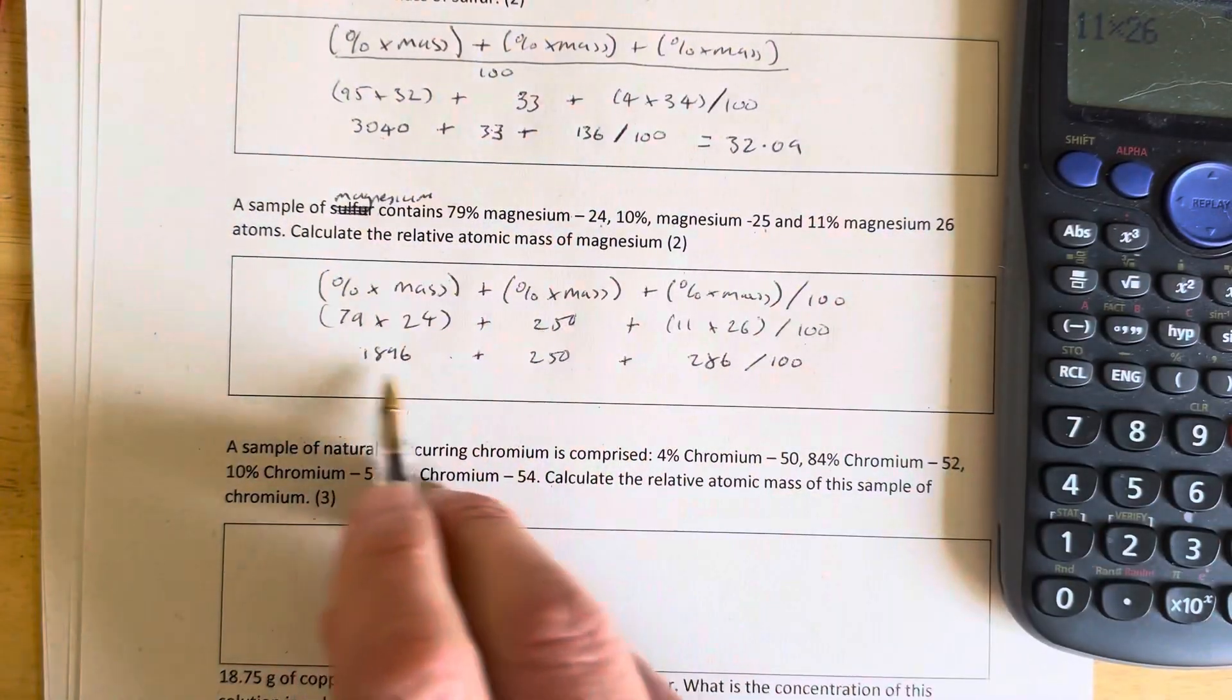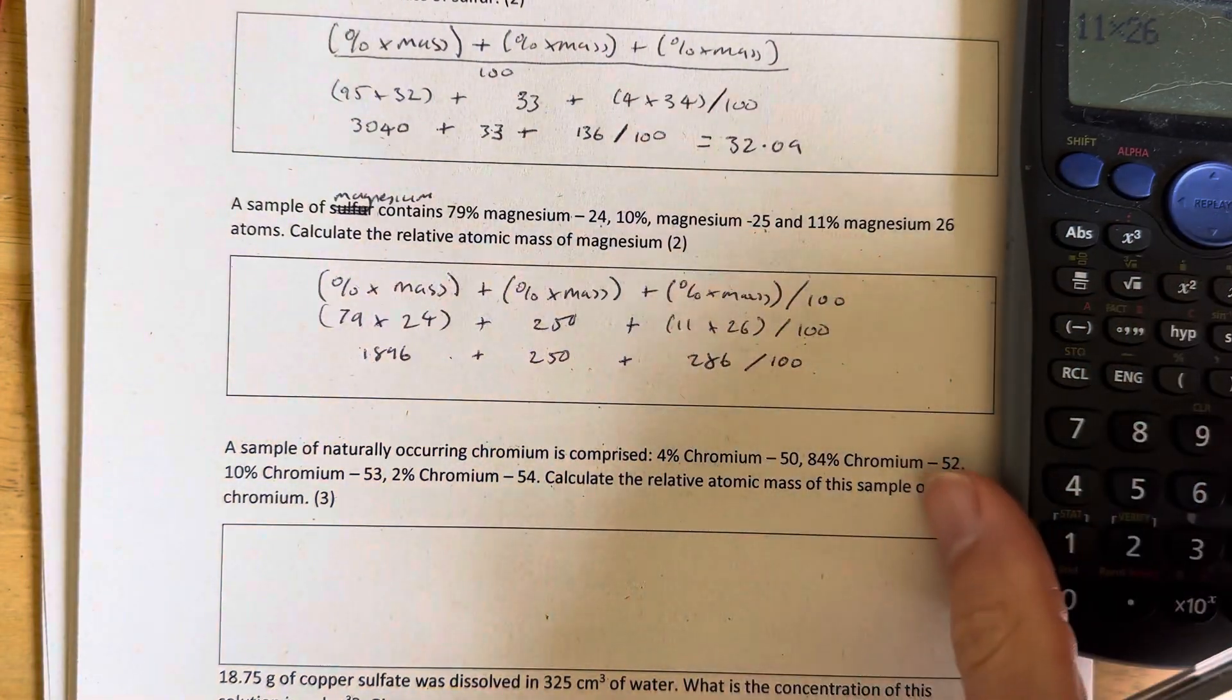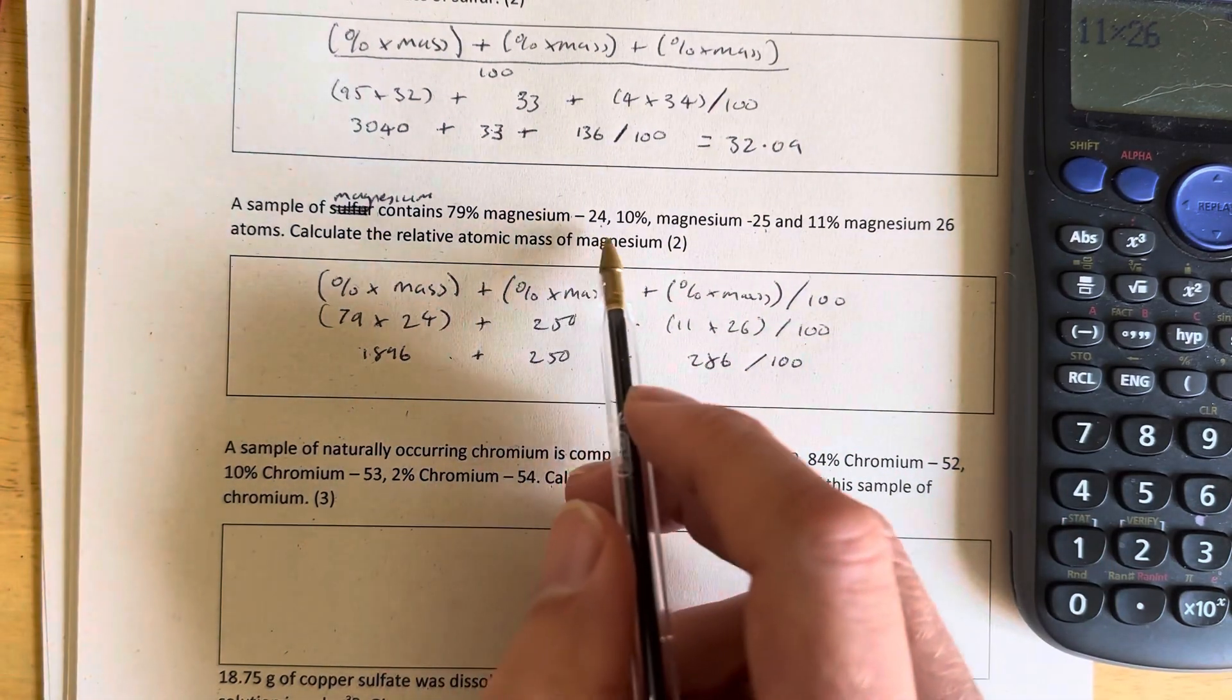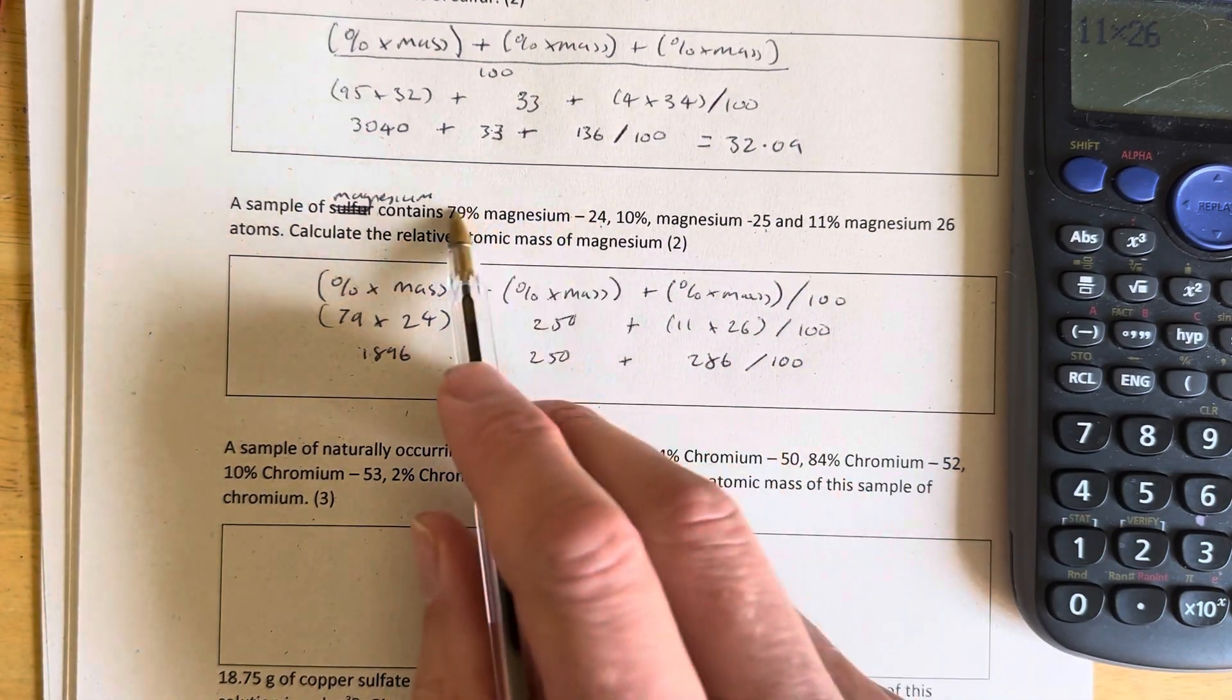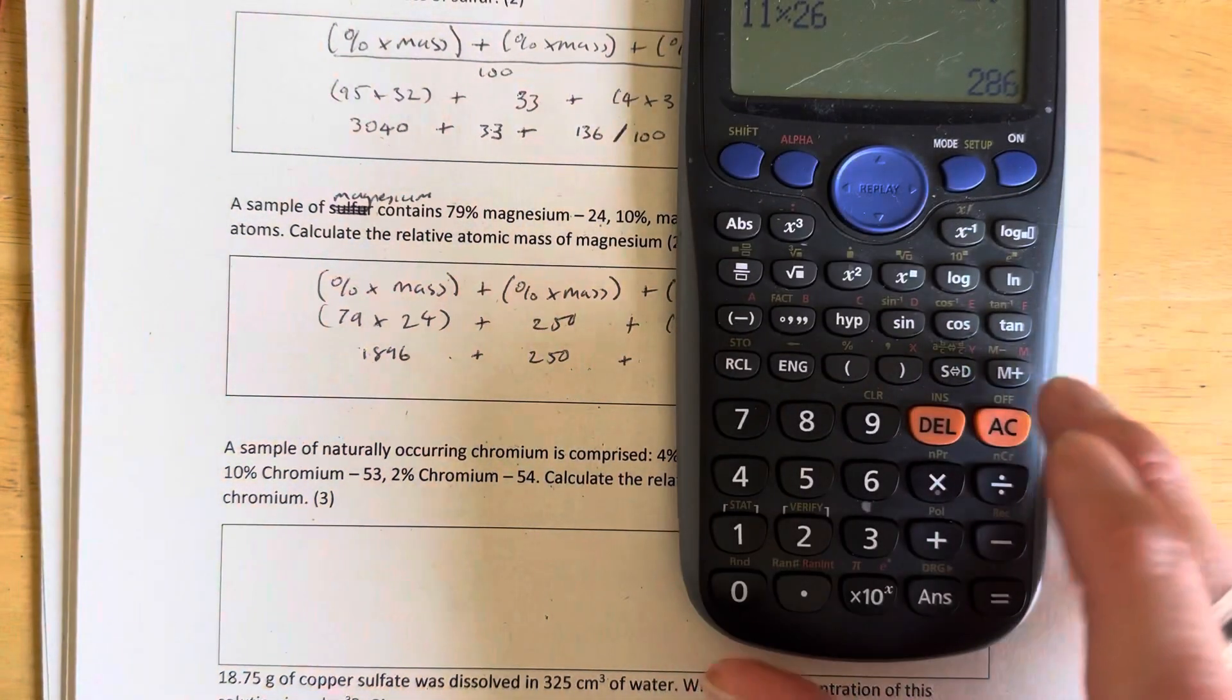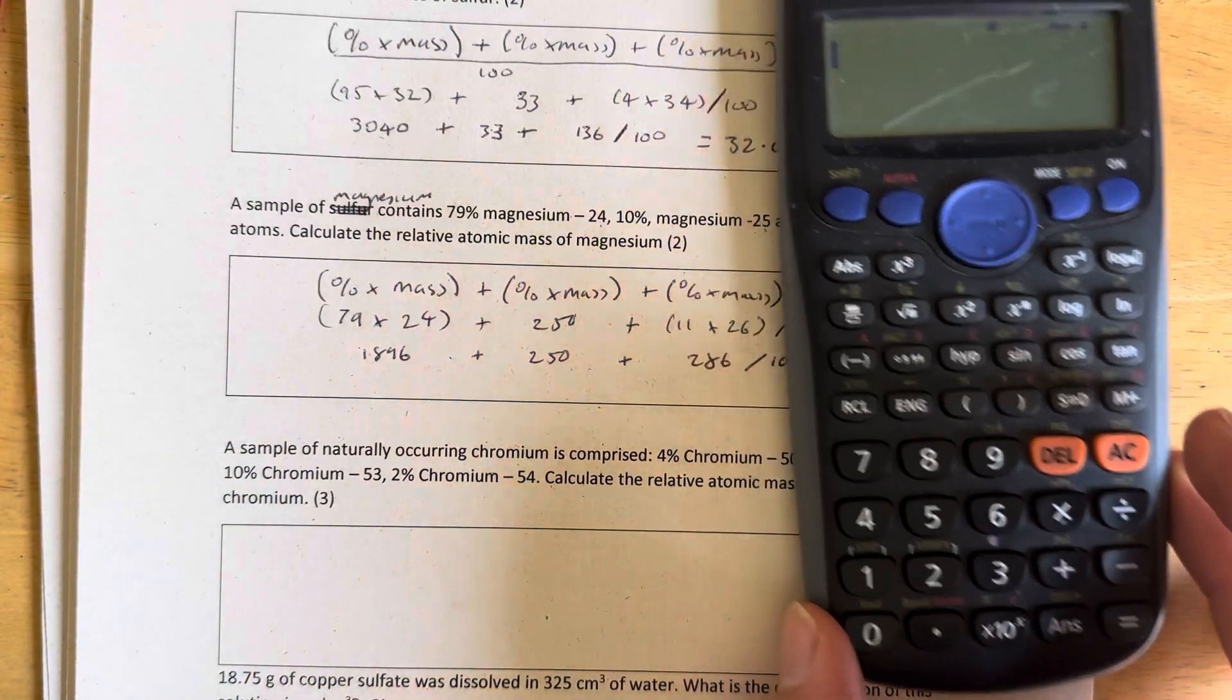So we've now got those three together. We're going to add them together and divide by 100. The answer is going to have to be pretty close to 24 because most of this sample is magnesium-24. So that's another check we've got our work correct.